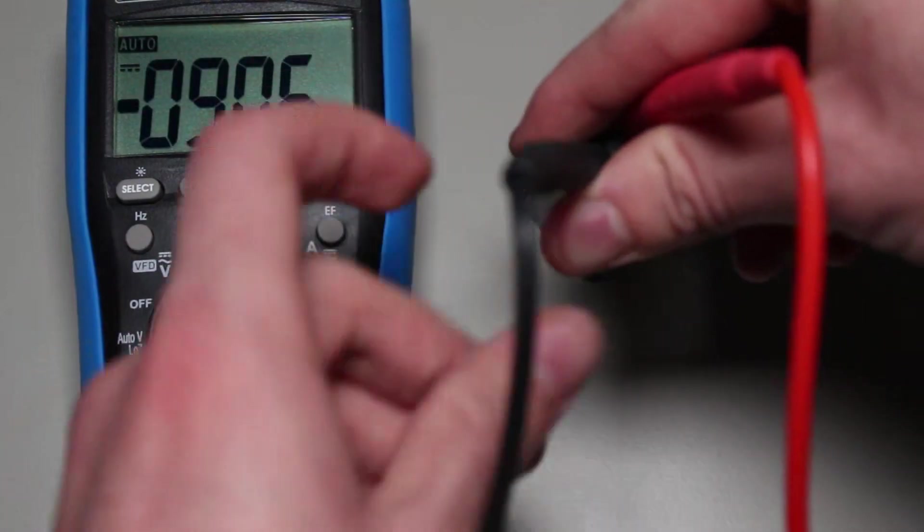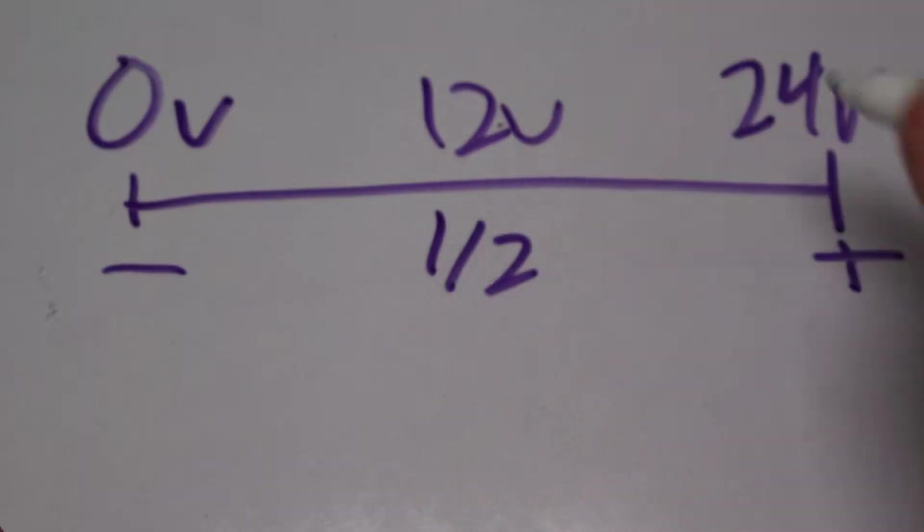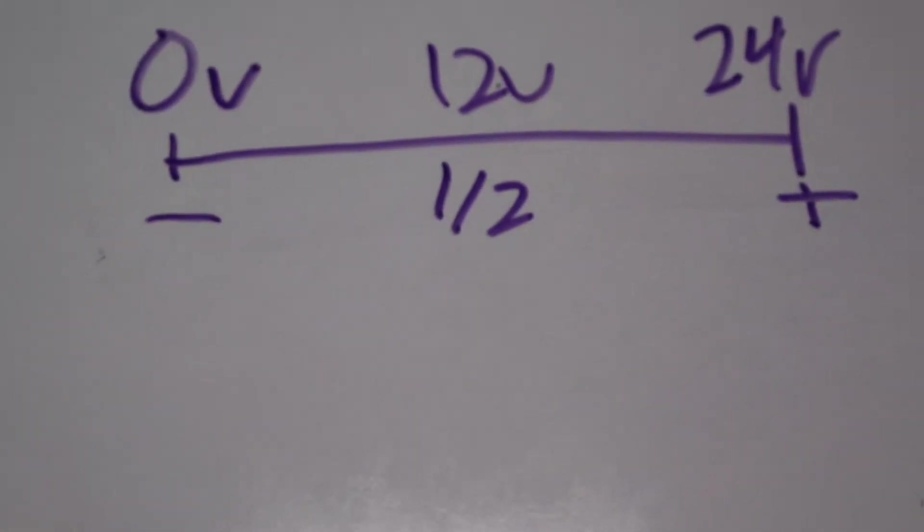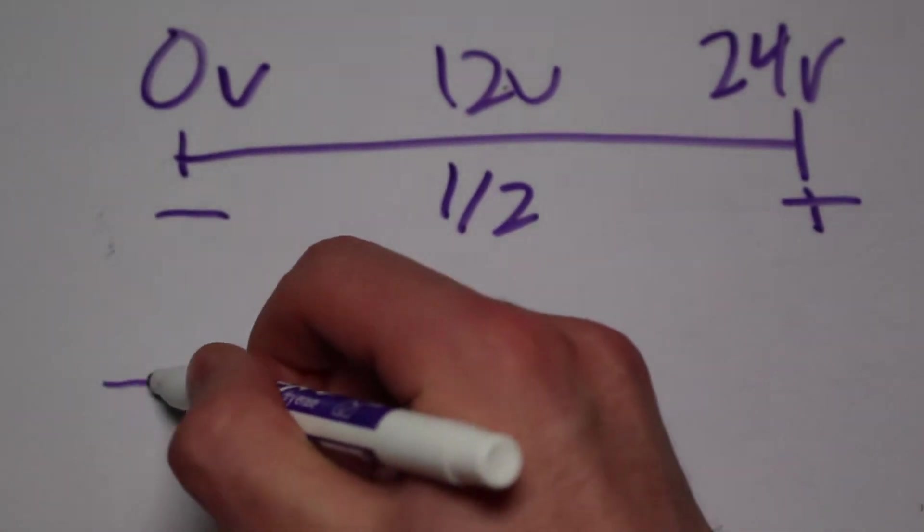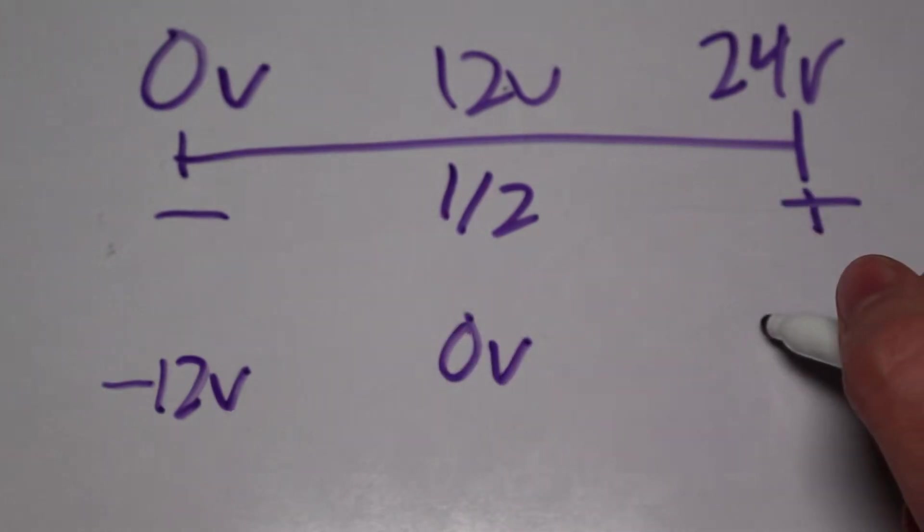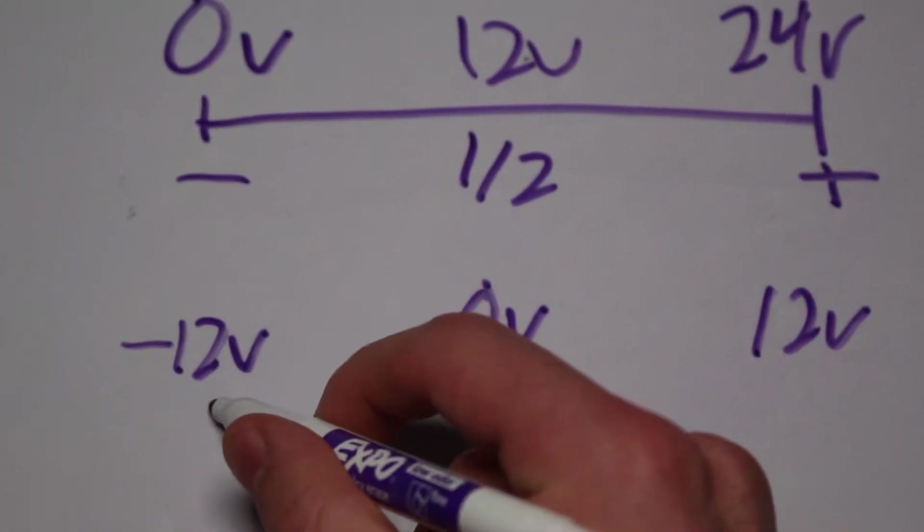If we have three different voltage points, 0 volts, 12 volts, and 24 volts, you can rearrange the point of reference. Instead of saying that the bottom here is 0 volts, we can instead say that the middle is 0 volts. That means the bottom is now negative 12 volts, the middle is ground, and the top is 12 volts.